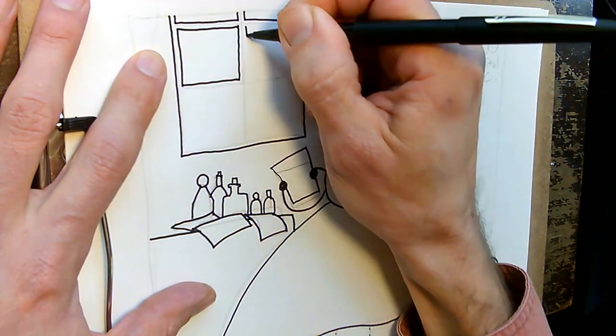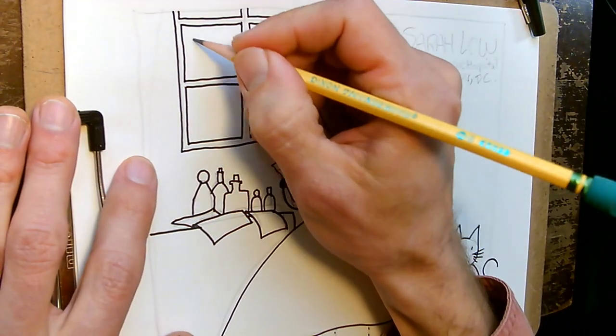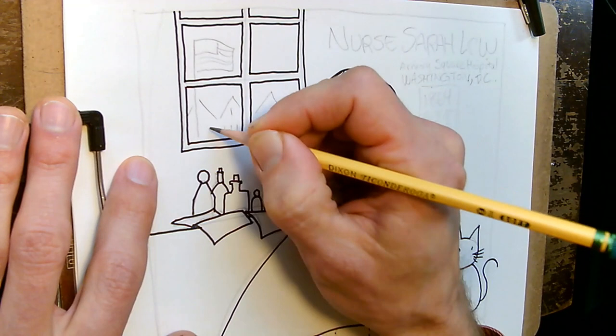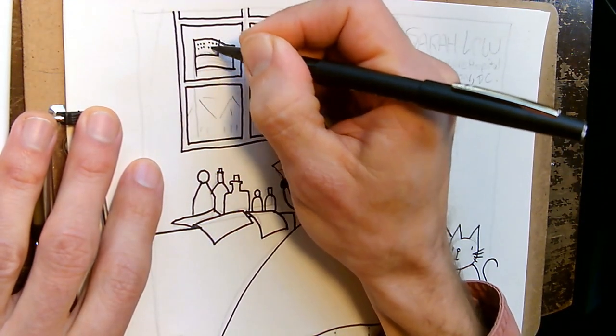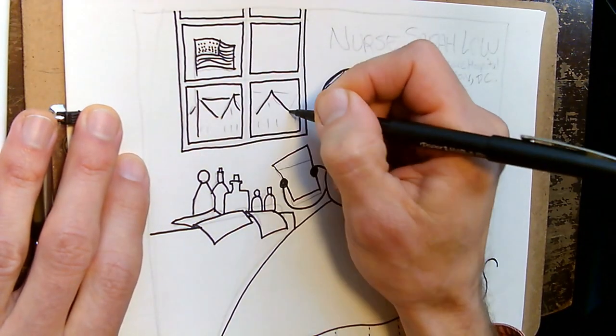You know as I'm doing this window I'm thinking what's outside this window. I'm going to go back to pencil. Maybe I'll put a flag waving in the breeze because it's wartime, that reminds us. Other hospital wards there in the distance. Once I know what they look like I'll come back in with the ink. I always go back to pencil if I'm making a major change like that though, because you never know if it's really what you want.